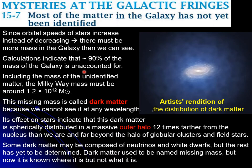Taking this into account, the amount of mass in the Milky Way increases all the way to 1.2 times 10 to the 12 solar masses. Of course, this is what is known as dark matter — it's dark because we cannot see it in any wavelength.